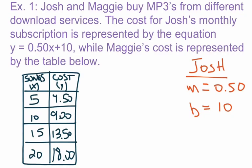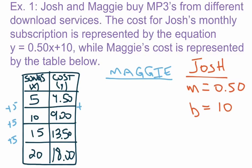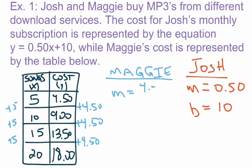Now we move on to the table representing Maggie's cost. We need to first identify the slope from the table. For the x values (songs), we're going up by 5, and for the cost (y), we're going up by $4.50. Using m equals delta y over delta x, that gives us 4.50 divided by 5, which simplifies to m equals 0.90.